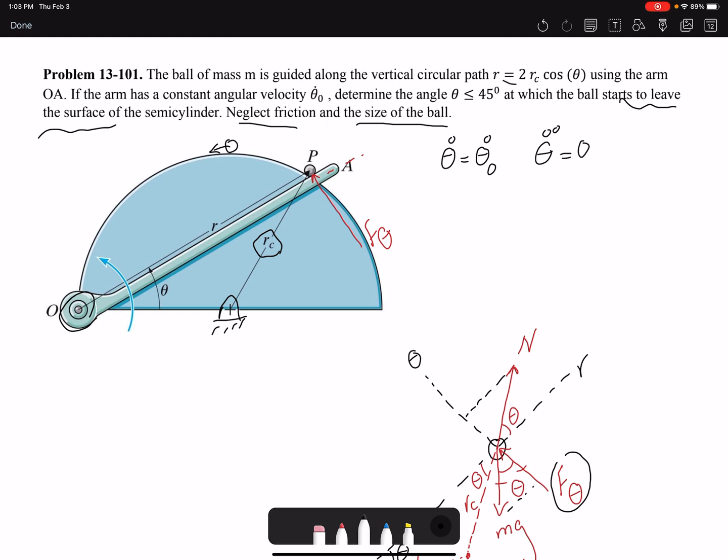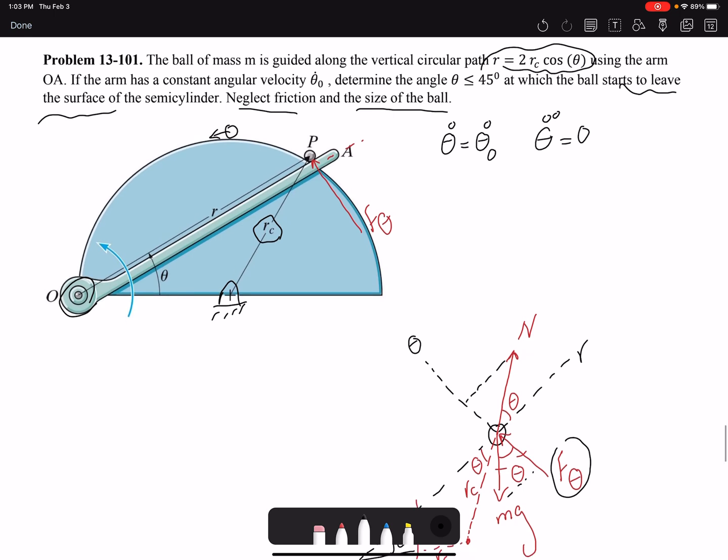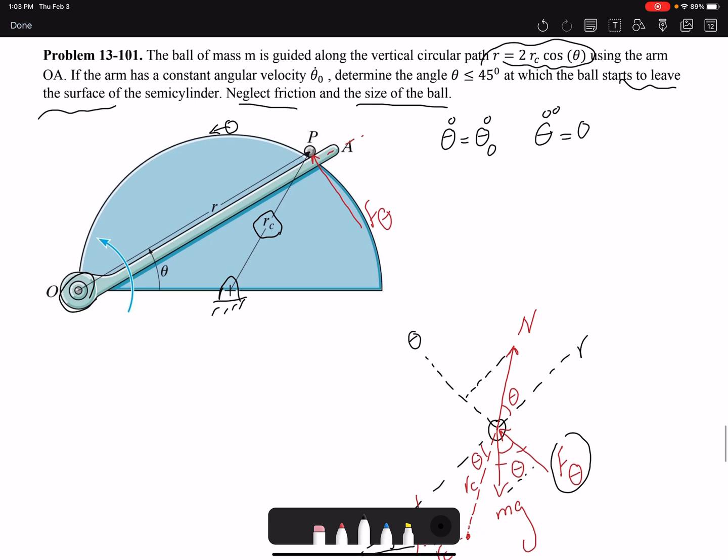Even if the problem had not given us 2Rc cosine theta based on the geometry, we know if I draw here, this would be perpendicular. And this is Rc, this is Rc. So that would be 2Rc. So that would be 2Rc cosine theta would give us our R value.